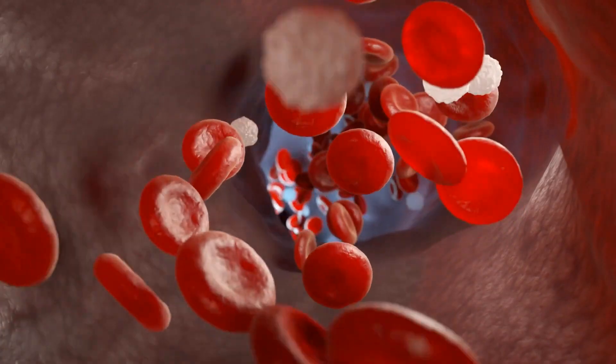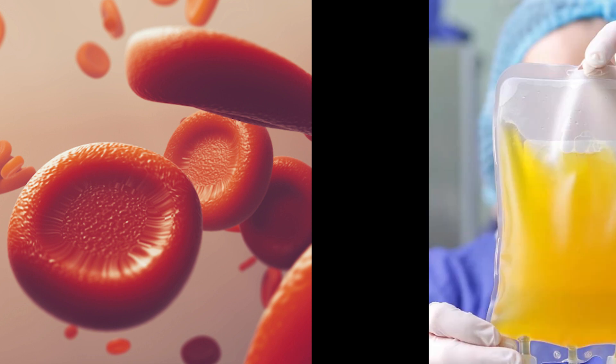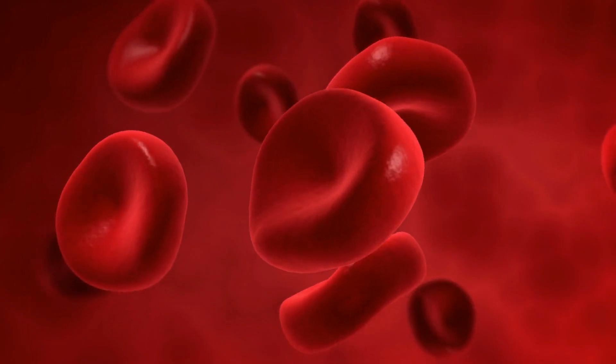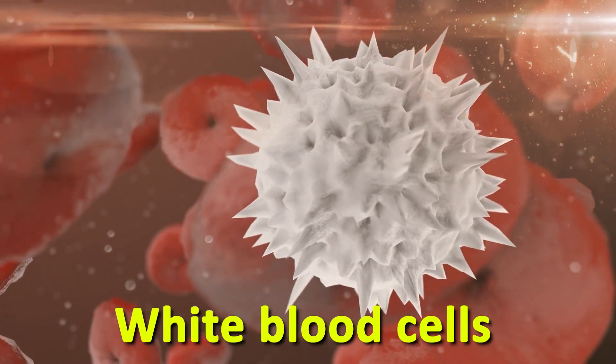Human blood can be divided into two parts, the solid part and the liquid part. The solid part of your blood is red blood cells, white blood cells, and platelets.